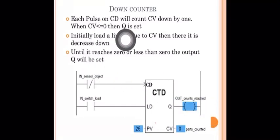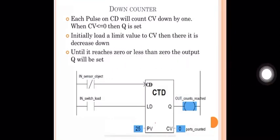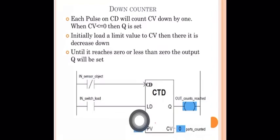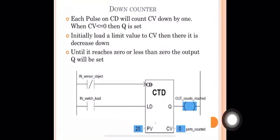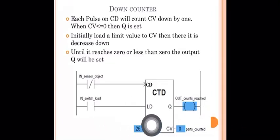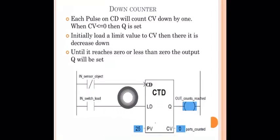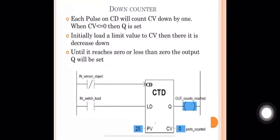So, each pulse on CD will count CV down by 1, and when CV is less than or equal to 0, output Q is set. When a pulse is applied to the load input LD, the preset value PV is loaded into CV. Then when CD inputs arrive, CV decrements. This is the down counter.